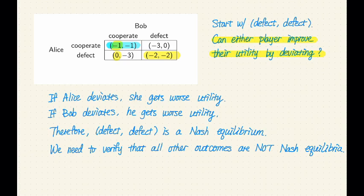Similarly, we can verify that defect cooperate is not a Nash equilibrium. So we're looking at this outcome right now, defect cooperate. Well, why is this not a Nash equilibrium?